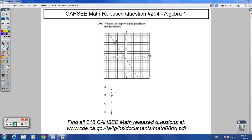Welcome to release question 204 for CAHSEE Math. It says, what is the slope of a line parallel to the line below? I want to show you a couple different ways you could do this one. So let's do what I think is the easier way first.